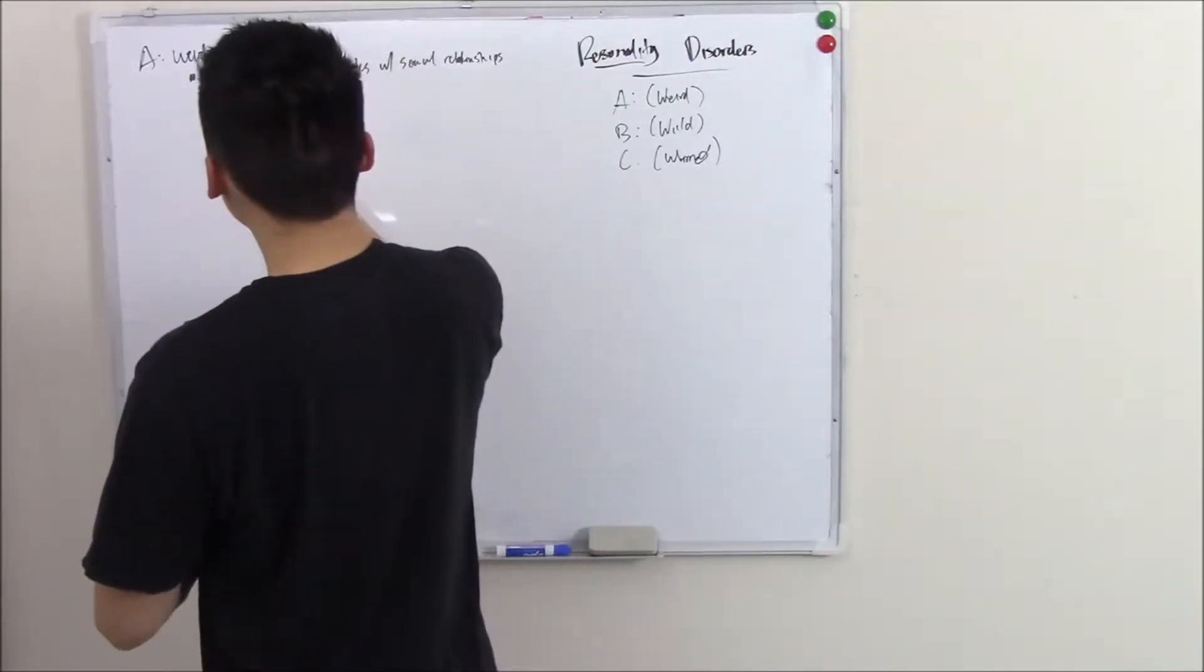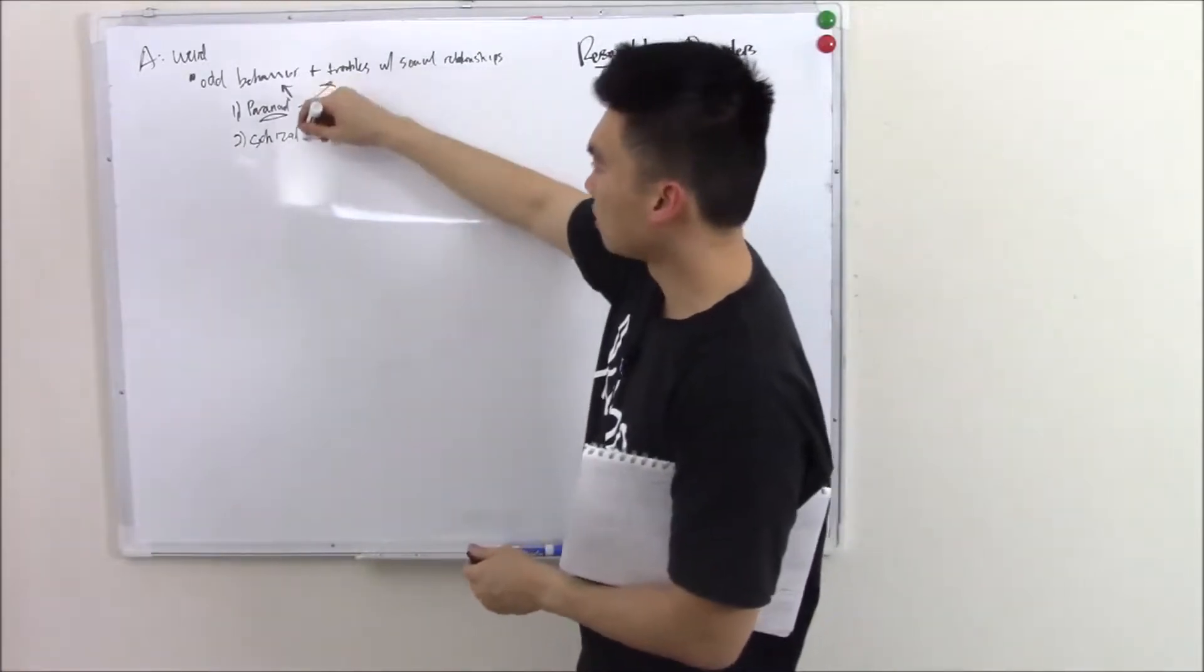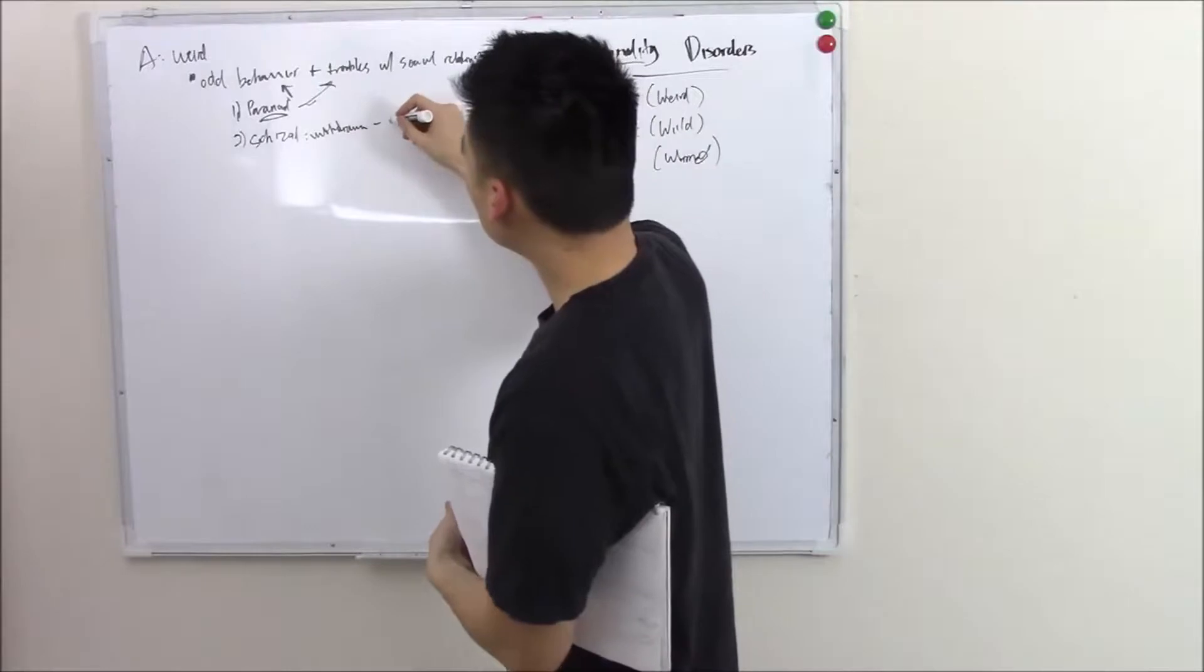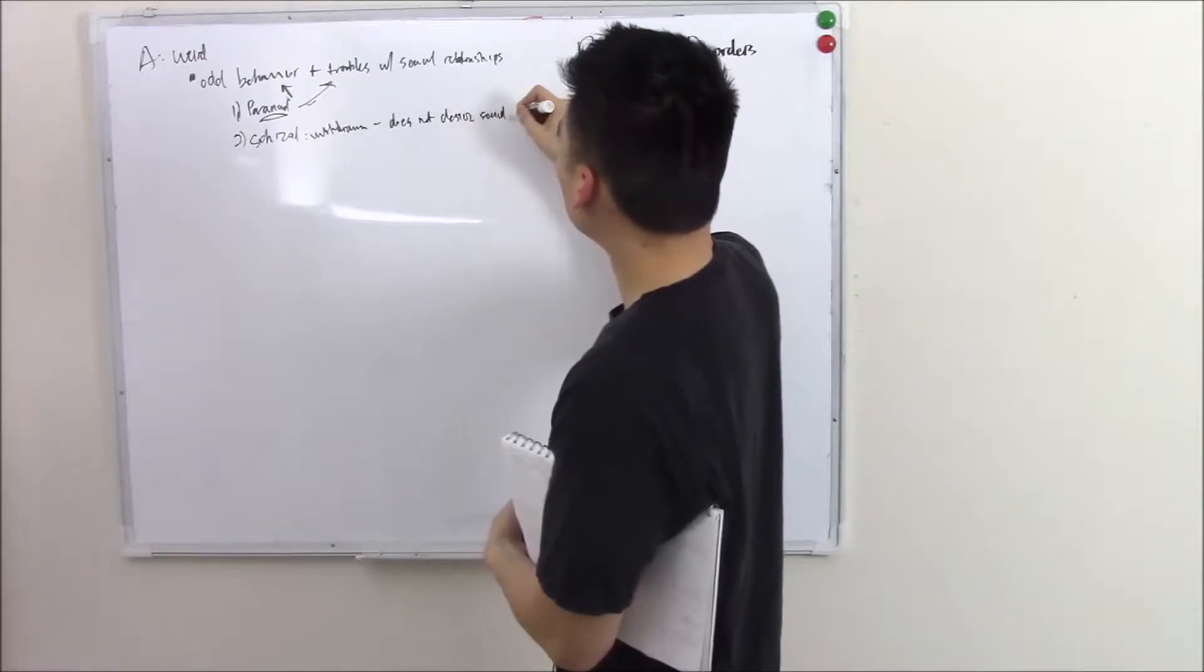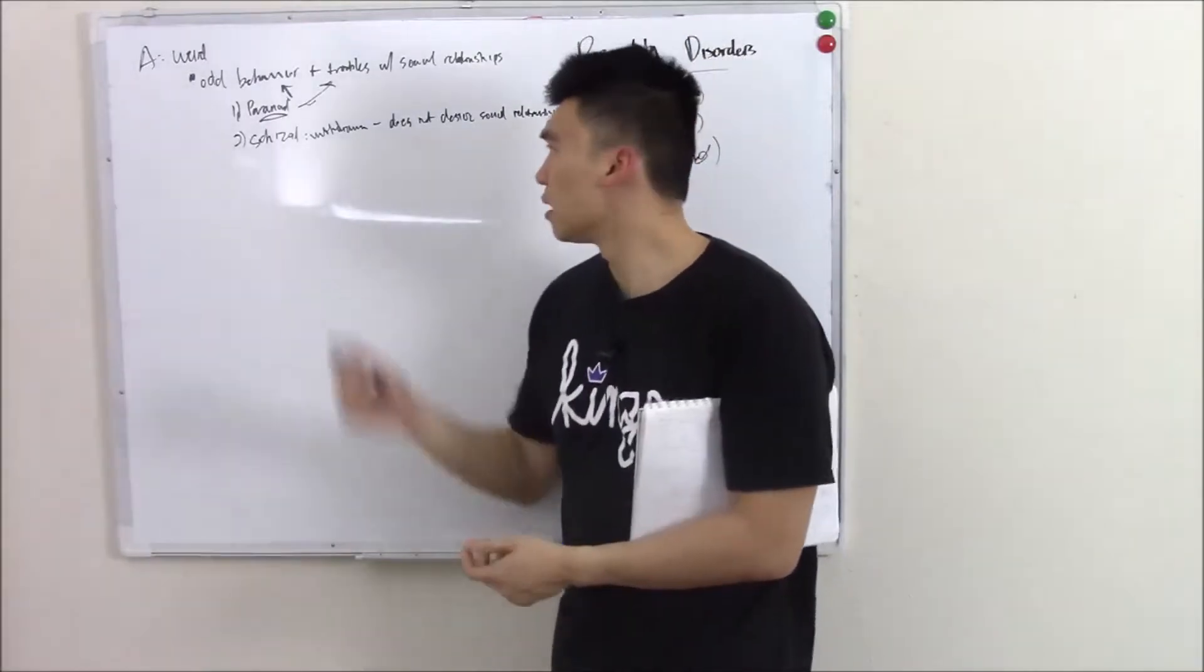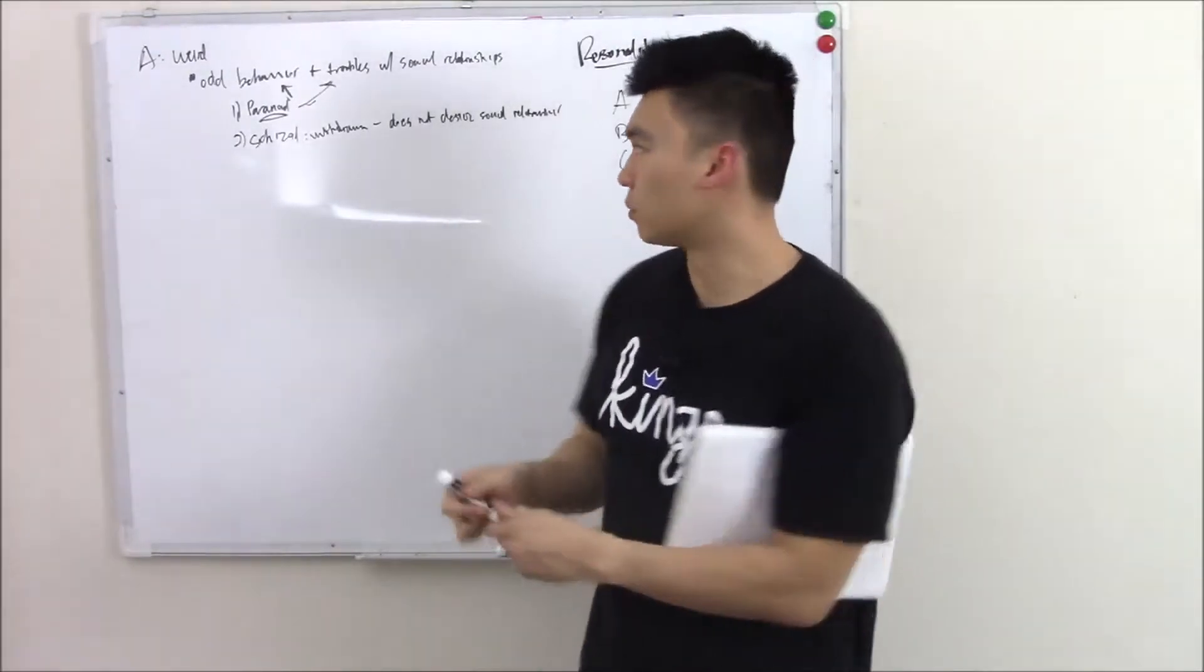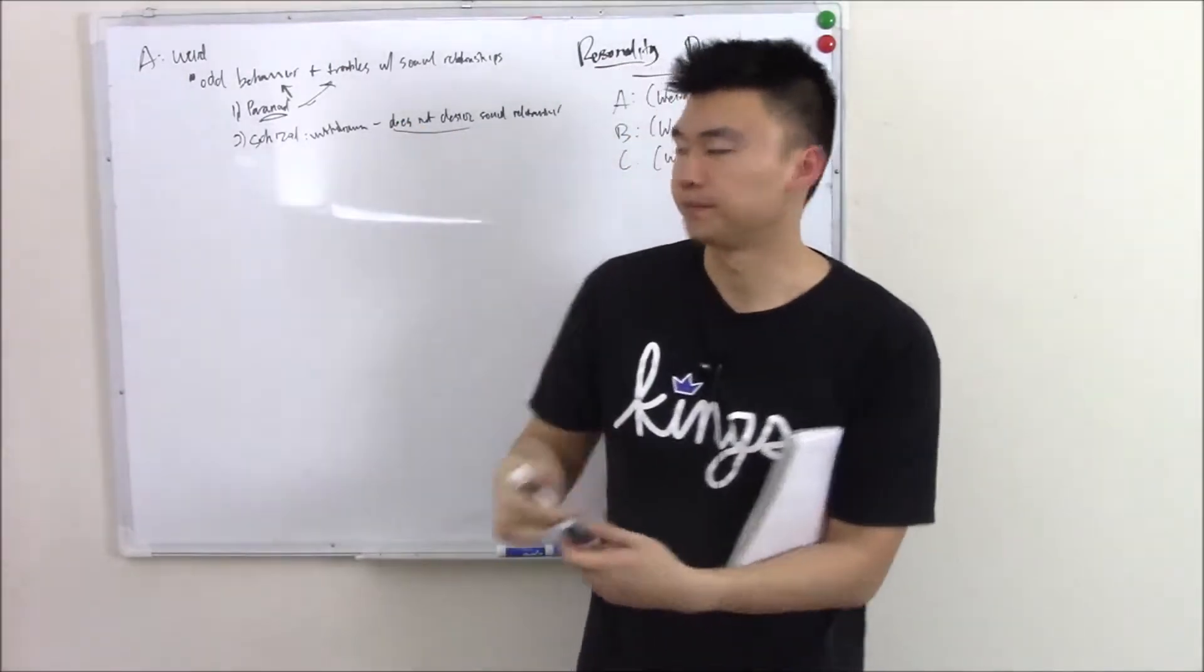Another one, you can have schizoid. Easy way to remember schizoid is it rhymes with android. These people are like robots. They're very withdrawn. They don't like social interaction. In fact, they're very content with just never interacting with people in general. So I'll say does not desire social relationships. I got a question about a computer programmer who studied and stayed in the room all day, didn't interact with anybody and didn't want to. That's the important part. Does not desire to interact. That's schizoid personality disorder.